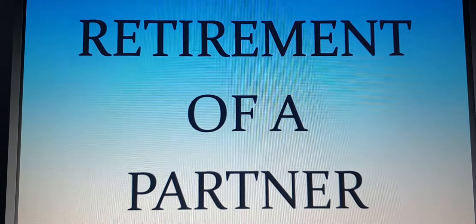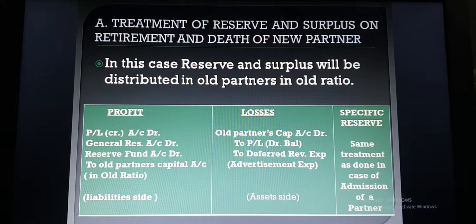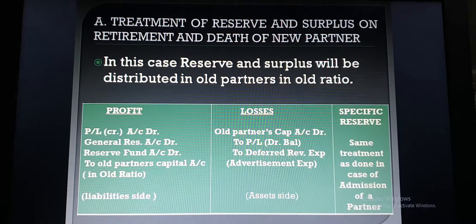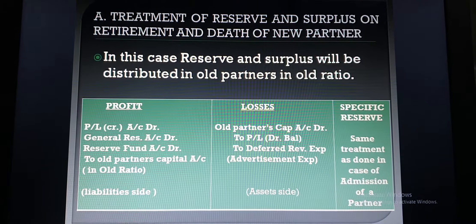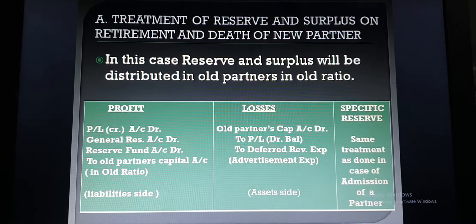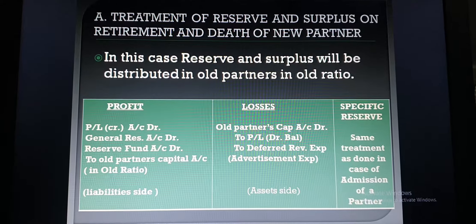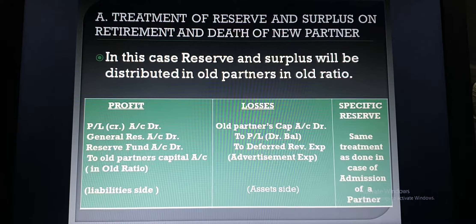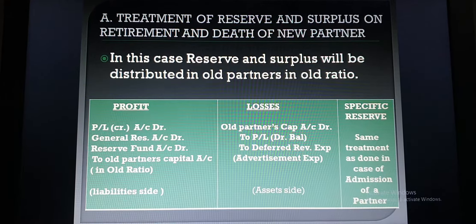Here is the treatment of reserves and surpluses on the retirement and death of a partner. As I already told you at the time of admission of a partner, whatever reserves and surplus that contain profit, losses, and specific reserves will be distributed among the old partners in the old ratio. The same treatment will be applicable in case of retirement and death of a partner.